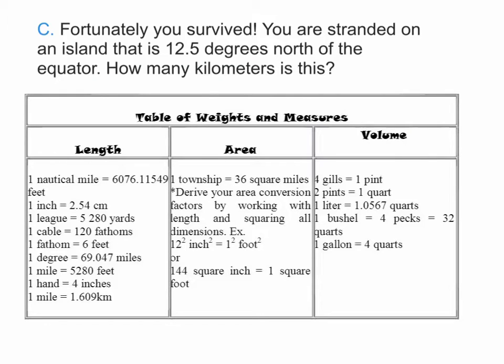Let's start with C. It says, fortunately you survived. You were stranded on an island that is 12.5 degrees north of the equator. How many kilometers is this? We're going to be going from 12.5 degrees to kilometers. How are we going to make that conversion?